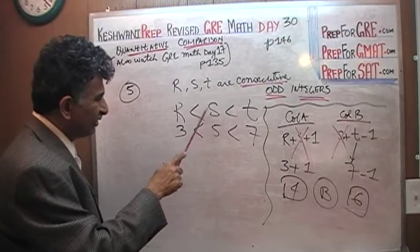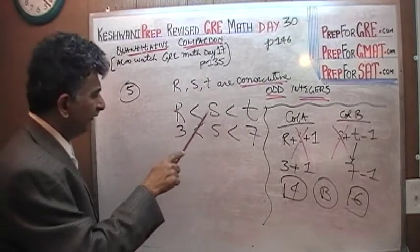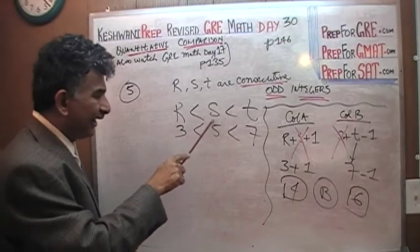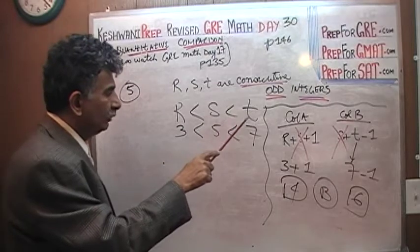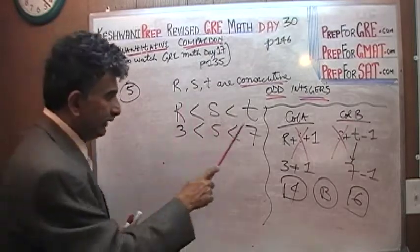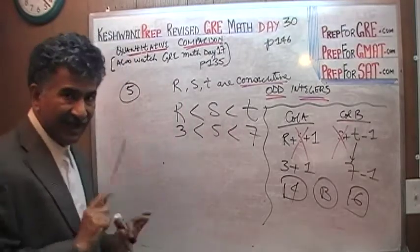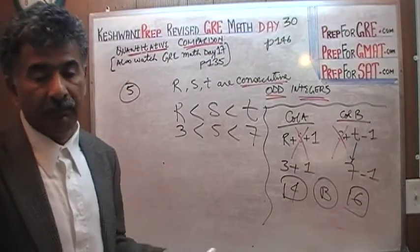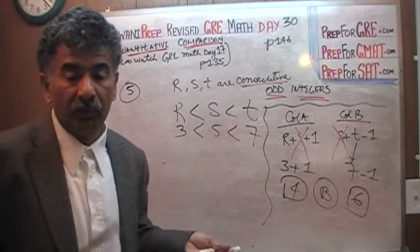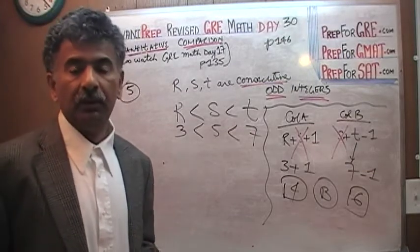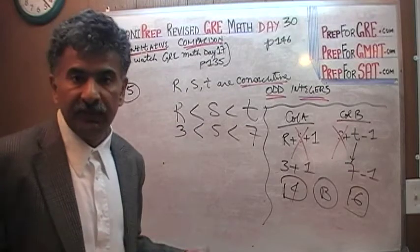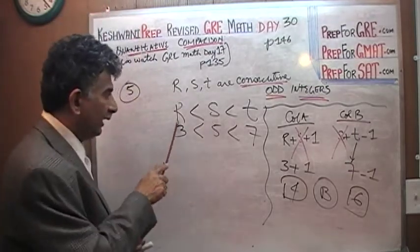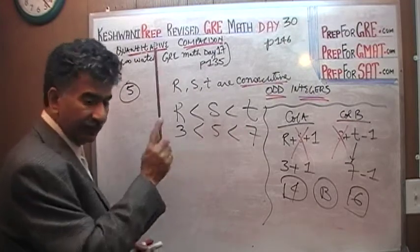Because they have to be consecutive odd or even integers, whatever S is, S has to be more than 2, sorry, S has to be 2 more than the guy before him. So, R has to be 2 less than S, S has to be 2 less than T. Or, T has to be 2 more than S, and S has to be 2 more than R. It has to be. That's what makes them consecutive odd or consecutive even numbers. If they were consecutive even numbers, it would have been 2, 4, and 6. 2 more each time you add 2. If they were consecutive odd integers, it would be 3, 5, 7, 9, 11. The difference is always going to be 2. So this guy is 2 more than R, and T is 2 more than S.